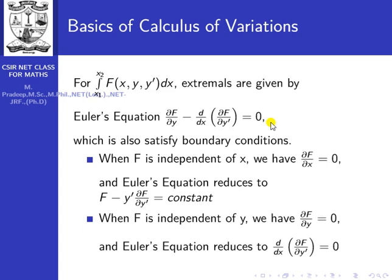We can reduce the Euler equation under certain conditions depending on the integrand function F. The first case: when F is independent of x — that is, F is a function of y and y' only — then ∂f/∂x = 0, and the Euler equation reduces to: F − y'(∂f/∂y') = constant.